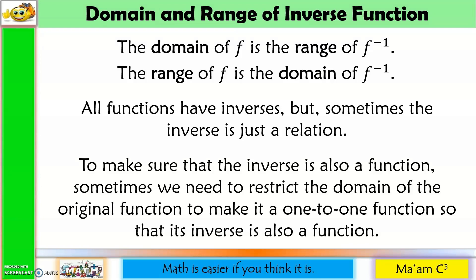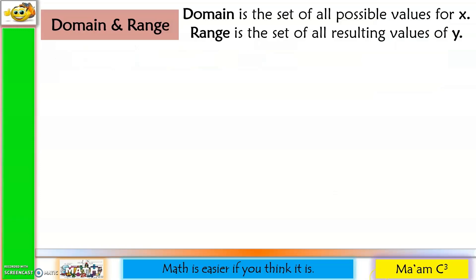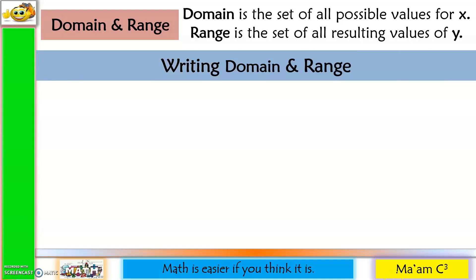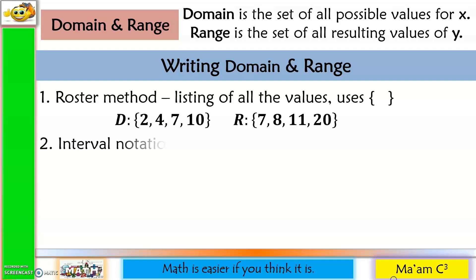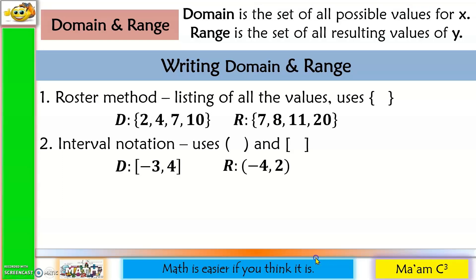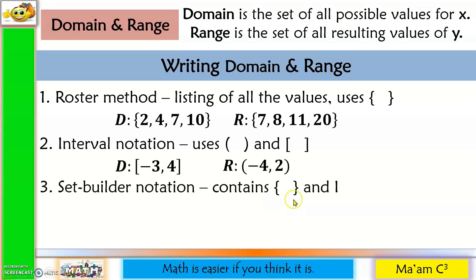Let's have a quick review on domain and range. Domain is the set of all possible values for x, while range is the set of all resulting values of y. There are several ways to write domain and range: the roster method, which lists all values enclosed in braces; interval notation, which uses parentheses and brackets; and set builder notation, which uses braces and a vertical line.